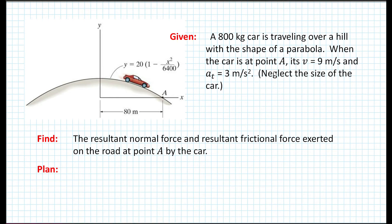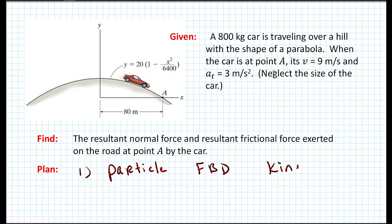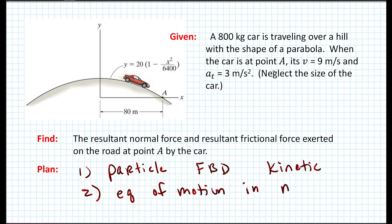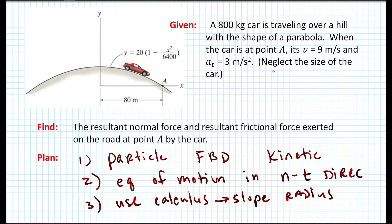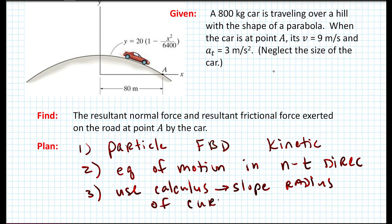In planning our solution: first, we'll treat the car as a particle, then draw its free body diagram and kinetic diagram. Next, we'll apply the equations of motion in the normal and tangential (NT) directions. Third, we'll use calculus to determine the slope and the radius of curvature at point A.